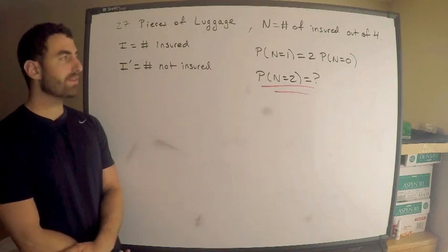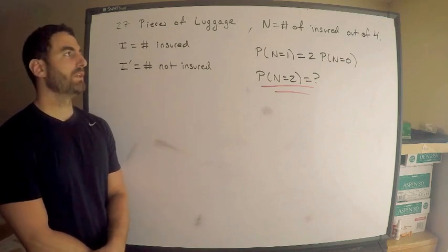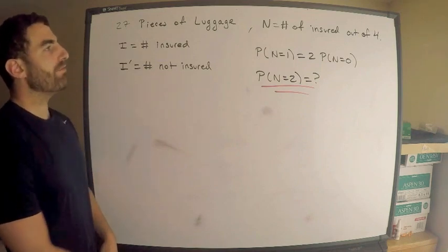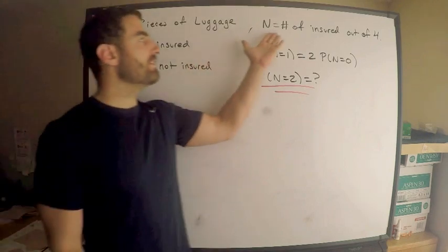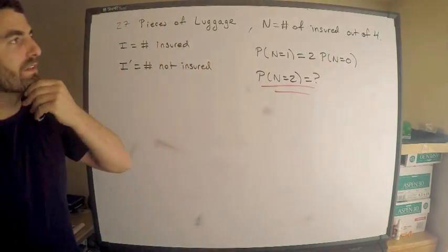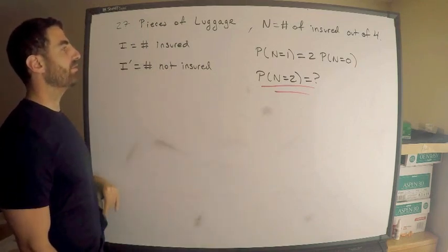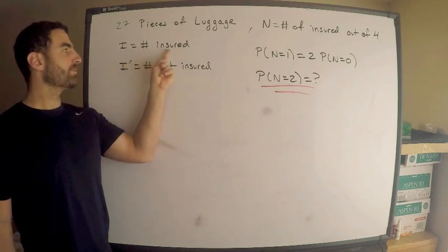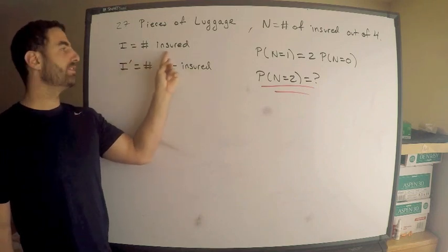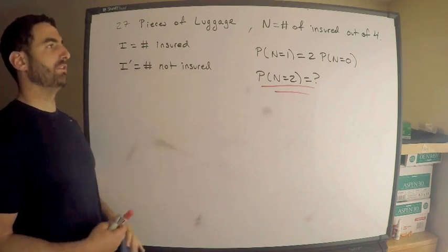We have 27 pieces of luggage, and we know that four of them were damaged. And so I have a random variable. I'm interested in something to do with this random variable n, the number of insured pieces of luggage out of the damaged ones, out of the four that were damaged. We don't know how many were insured.